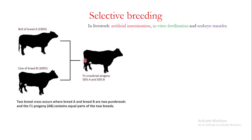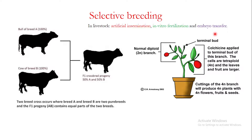In livestock, selective breeding can be done through artificial insemination, in vitro fertilization, and embryo transfer. The same concept is applicable to plants — you can cross plants with good characters. For example, as you can see in this diagram, a normal diploid organism with small leaves and small fruits can be converted to a tetraploid (4n) by making a hybrid, which gives you the desired traits that you want in a particular plant.